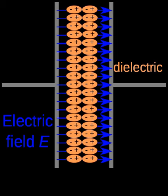Commercially manufactured capacitors typically use a solid dielectric material with high permittivity as the intervening medium between the stored positive and negative charges. This material is often referred to in technical contexts as the capacitor dielectric. The most obvious advantage to using such a dielectric material is that it prevents the conducting plates, on which the charges are stored, from coming into direct electrical contact. More significantly, however, a high permittivity allows a greater stored charge at a given voltage. This can be seen by treating the case of a linear dielectric with permittivity ε and thickness d between two conducting plates with uniform charge density.